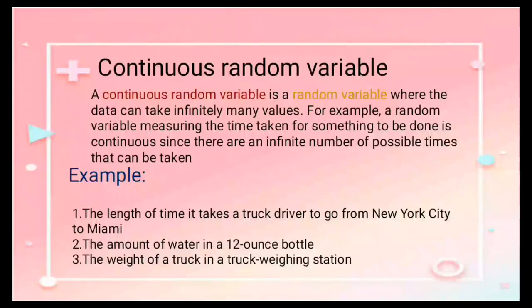The difference between discrete and continuous random variable is that the discrete variable is a variable whose value is obtained by counting, meanwhile the continuous variable is a variable whose value is obtained by measuring.